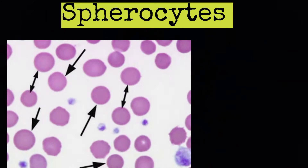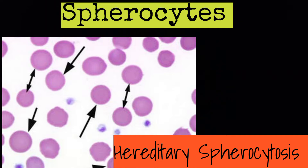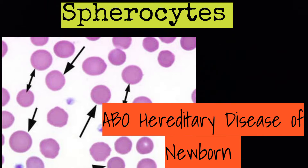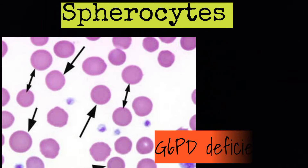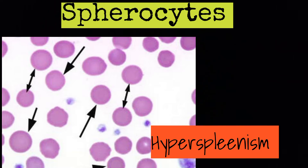First, cell type: spherocytes. Clinical conditions in which it is present: hereditary spherocytosis (HS), AIHA that is autoimmune hemolytic anemia, ABO HDN that is ABO hereditary disease of newborn, G6PD deficiency, and hypersplenism.